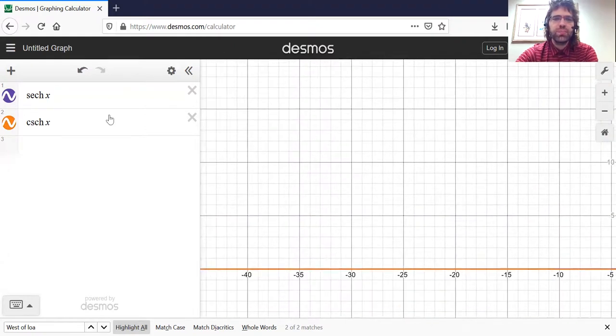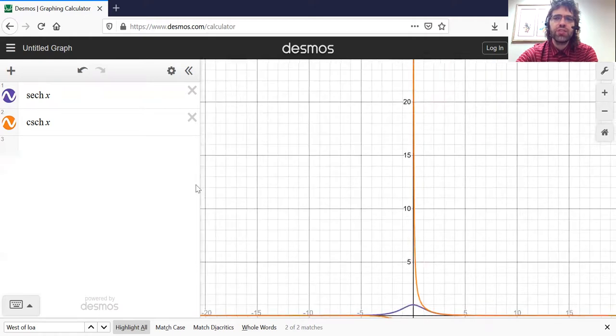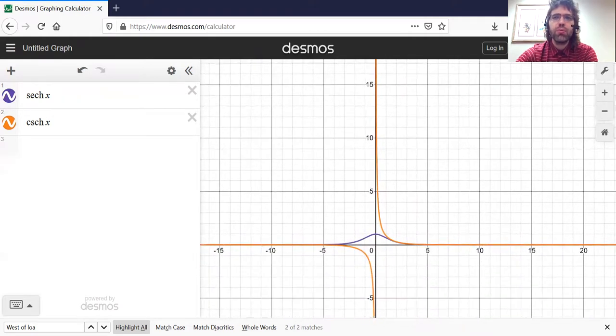When x is large, these curves are indistinguishable. When x is small, these curves are indistinguishable.